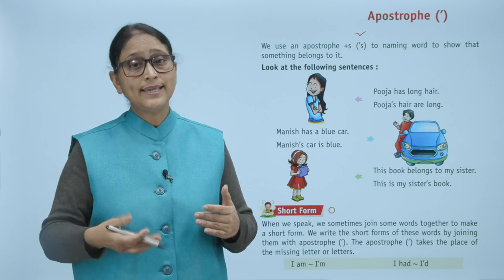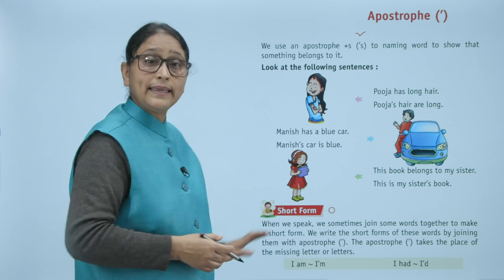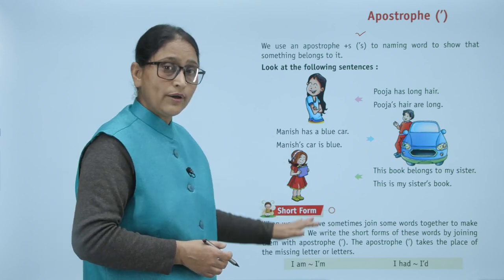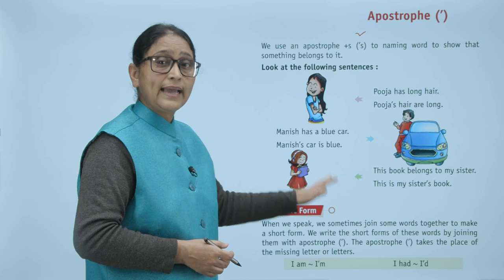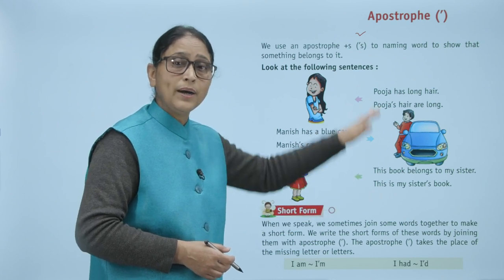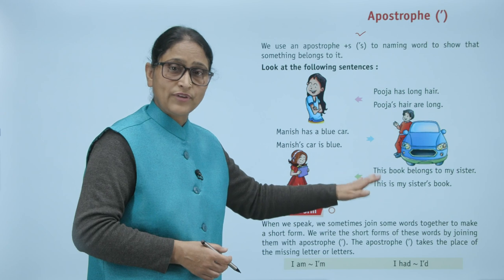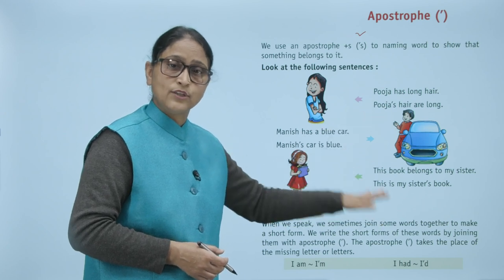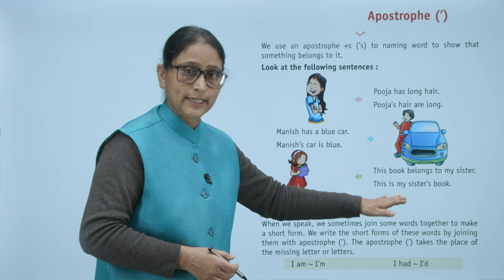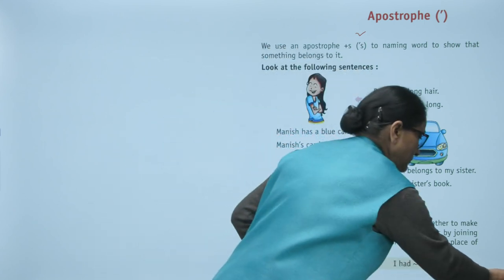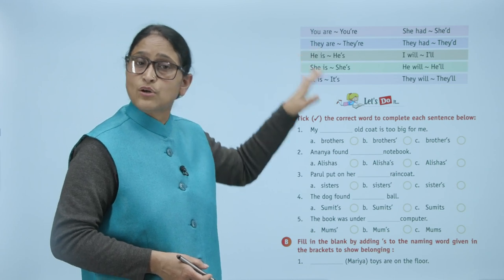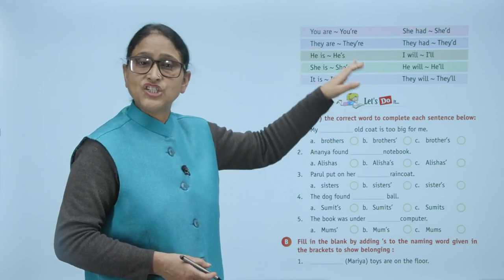For example: 'I am' — the apostrophe replaces the missing letter, so 'I am' becomes 'I apostrophe M' — I'm. 'I had' becomes 'I apostrophe D' — I'd. 'You are' becomes 'you apostrophe R E' — you're. 'You had' becomes 'you'd'.